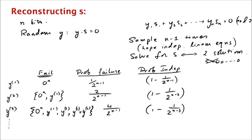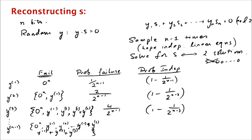We just keep going like this. For the (n-1)th choice, we fail if we have 0, y1, y2, ..., y1 plus y2, y1 plus y2 plus y3, and all possible such sums. The cardinality of this set is exactly 2^(n-2) — all possible subsets of the first n minus 2 elements. So the probability of failure is 2^(n-2) divided by 2^(n-1), which is one half. So the probability our last choice is independent is 1 minus 1/2, which is one half.